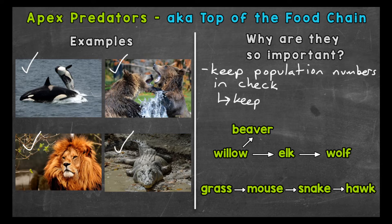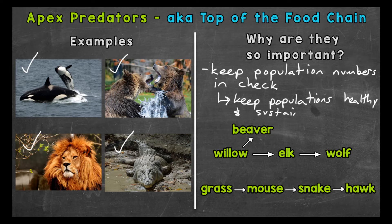Staying with herbivores — without predators, populations may mainly stay in one area. This again causes everything to be overeaten down to an unsustainable level. Apex predators keep prey populations on the move, which keeps vegetation numbers at a healthy level and also allows seeds to mature to a grown state.